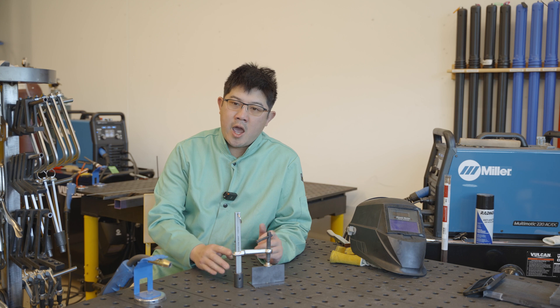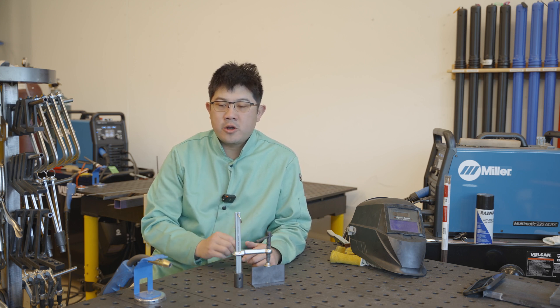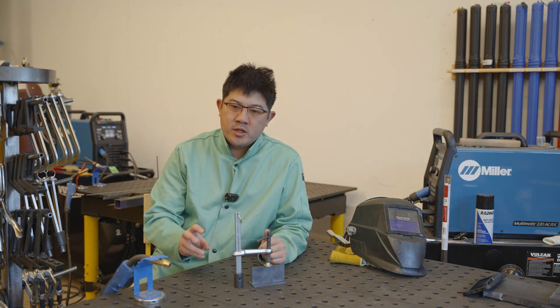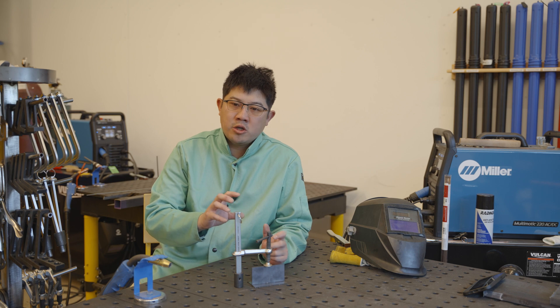So now typically, once you have your part clamped and secured, what you want to do is you want to tack the ends of the part. Tacking refers to just putting one bead of welding to hold your part in before you start welding. Now you want to tack both ends to make sure that as you're welding from one side to the other side, the heat doesn't cause your part to warp.